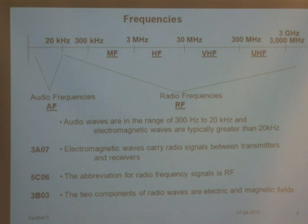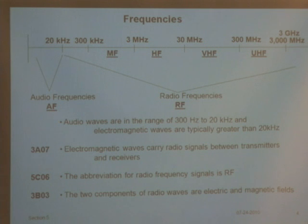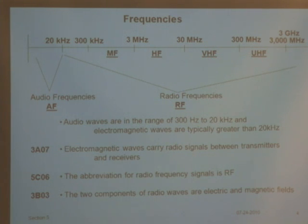Why do I give you all these abbreviations? Because a lot of the questions won't say 'audio frequencies' or 'radio frequencies' — they're going to start using the acronyms AF and RF. RF is radio frequencies. And in the world of amateur radio, we're given certain pieces of the spectrum we're allowed to use. Questions will also use the terms VHF and UHF.